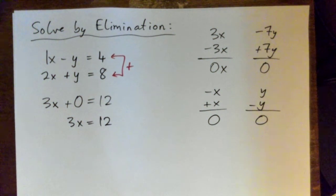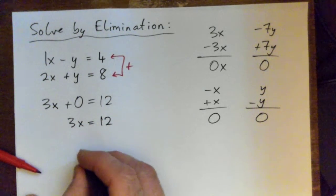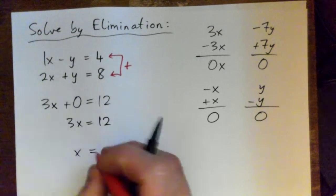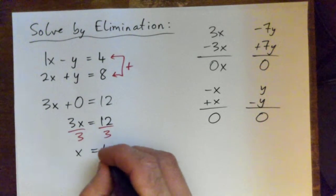So solve that for x and then find y. Nope, you gotta get x on its own, x equals something. So we gotta divide by 3, right? So x equals 4.